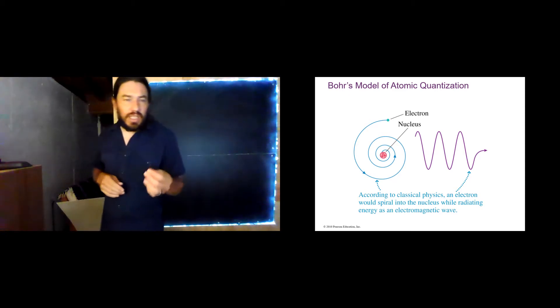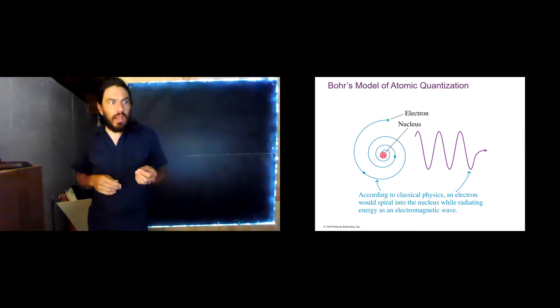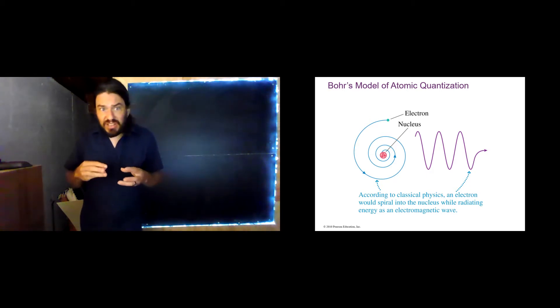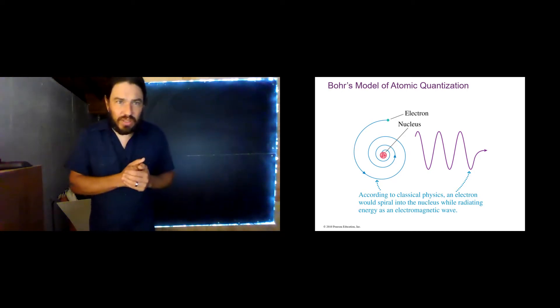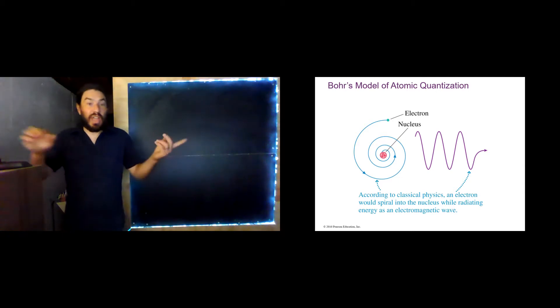So how is it that we're here 14 billion years after the Big Bang, 14 billion minus a few hundred thousand years since basically all of the hydrogen in the universe was created? How is that hydrogen still around? Why did those electrons not spiral in and combine with the nucleus? Well, that's a puzzle.